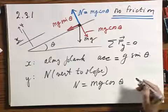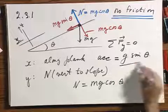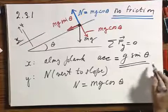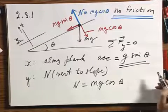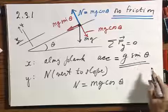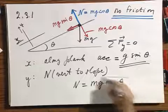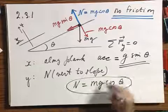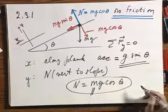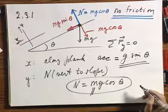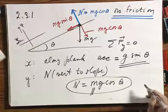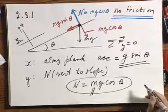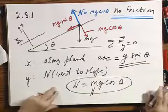You're being asked what the acceleration is along the slope. You know theta and you know g, so that shouldn't be too difficult. And you're being asked what n is — you know the mass of the object and you know theta. So I think you will have absolutely no problems with this whatsoever.